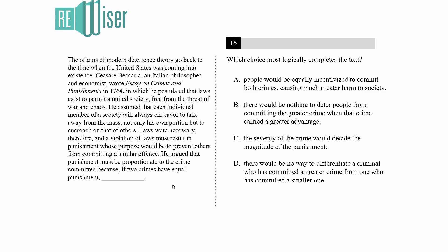Option A: People would be equally incentivized to commit both crimes, causing much greater harm to society. Option B: There would be nothing to deter people from committing the greater crime when that crime carried a greater advantage. Option C: The severity of the crime would decide the magnitude of the punishment. Option D: There would be no way to differentiate a criminal who has committed a greater crime from one who has committed a smaller crime.